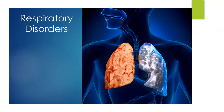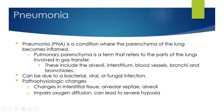After that brief refresh on pulmonary anatomy and physiology, we will move on to pulmonary conditions. Pneumonia is a condition where the parenchyma of the lungs becomes inflamed. Pulmonary parenchyma refers to the parts of the lungs involved in gas transfer — the alveoli, the interstitium, the blood vessels, the bronchi, and the bronchioles. Pneumonia can be due to bacterial, fungal, or viral infections. It can lead to pathophysiological changes in the interstitial tissue, the alveolar septa, and can sometimes even lead to permanent changes, impairing oxygen diffusion and causing severe hypoxia.